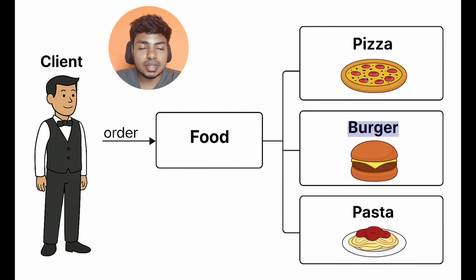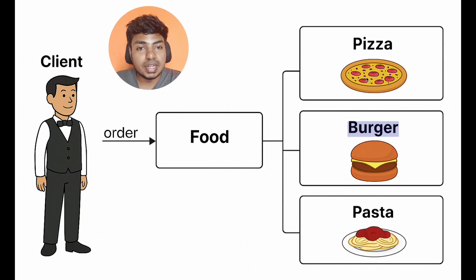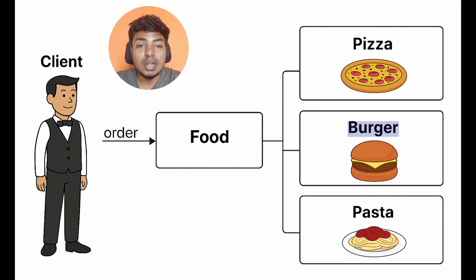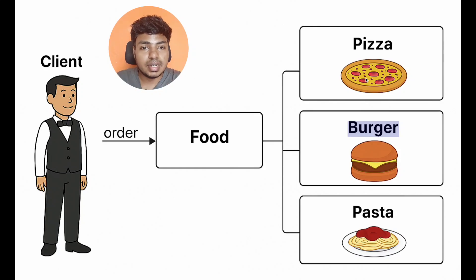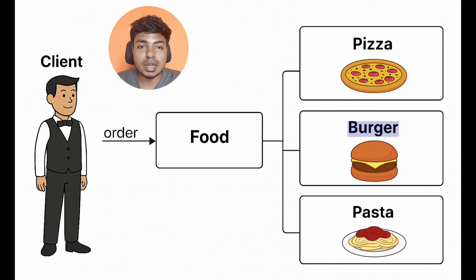The solution is: imagine who is in a restaurant — there is a waiter. The waiter goes to the customer, takes their order, asks what food they want, what type of customization. The waiter acts as a middleman between the customer and the restaurant. The restaurant cooks the food and delivers it to the customer through the waiter. If you tell the waiter, it is actually a factory.